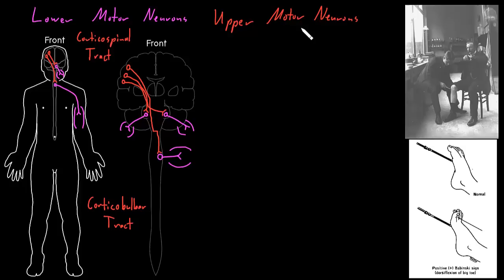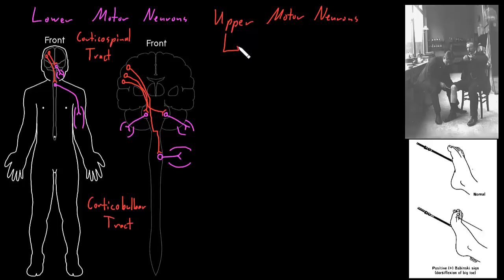Dysfunction of either the lower motor neurons or the upper motor neurons can cause weakness. If there's a problem with the lower motor neurons and they're not telling the skeletal muscle cells to contract, we can see weakness. But if there's a problem with the upper motor neurons and they're not telling the lower motor neurons to fire, we also don't get enough contraction and can see weakness. Just as there are lower motor neuron signs, there are upper motor neuron signs — things we can see in addition to, or even without, weakness. These signs can help us determine whether a patient's weakness comes from the lower or upper motor neurons.